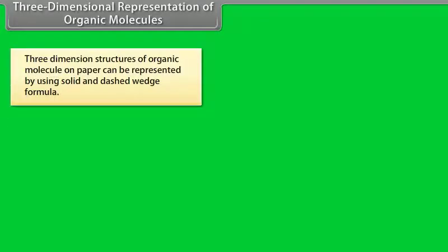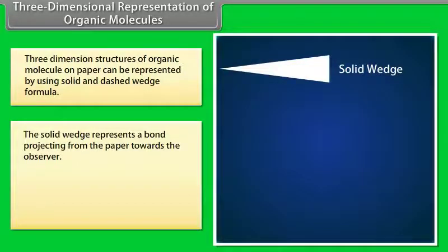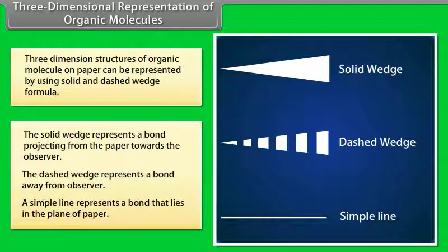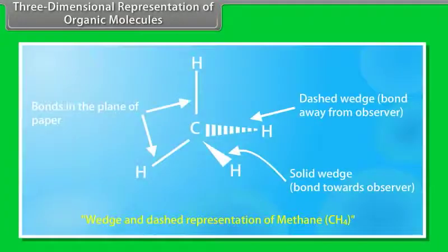Three-dimensional representation of organic molecules. Three-dimensional structures of organic molecules on paper can be represented using solid and dashed wedge formulas. The solid wedge represents a bond projecting from the paper towards the observer, the dashed wedge represents a bond away from the observer, and a simple line represents a bond in the plane of the paper. For example, methane.